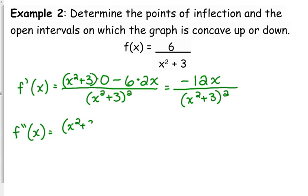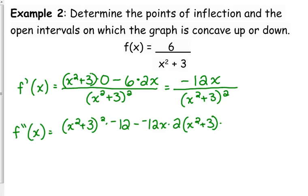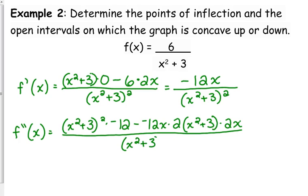Low d high — this time the top does have a derivative — minus high d low. We've got to use the chain rule: bring down the exponent, keep the inside the same, so we have 1 from the exponent, multiplied by the derivative of the inside. All over the bottom squared — squaring something that's already squared makes it to the fourth power.